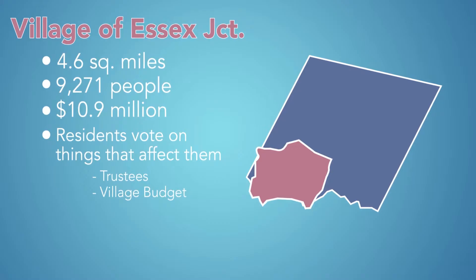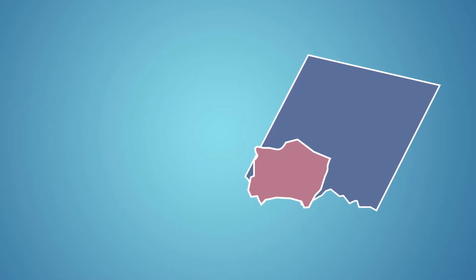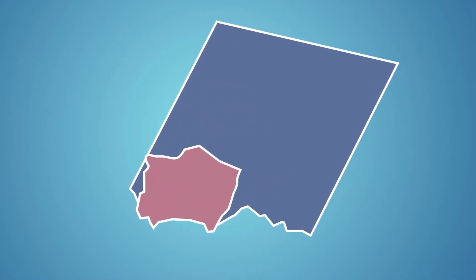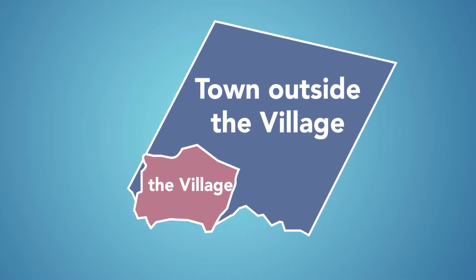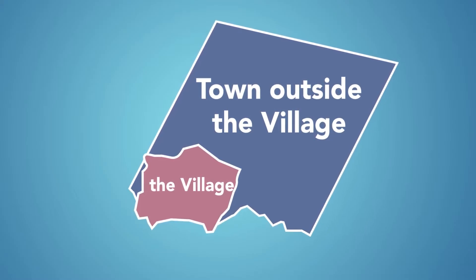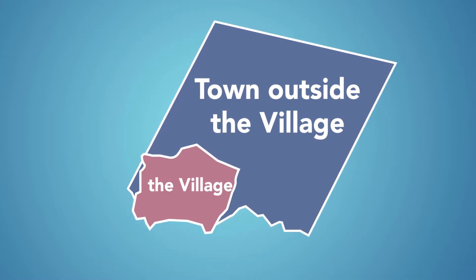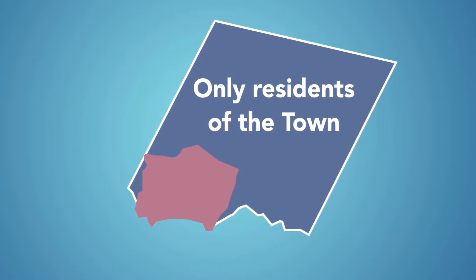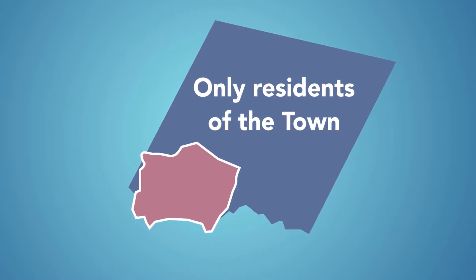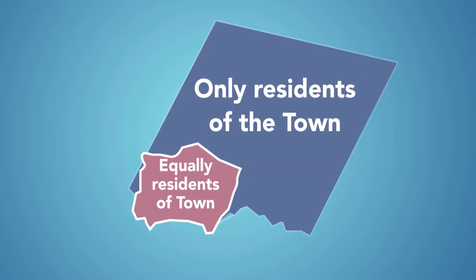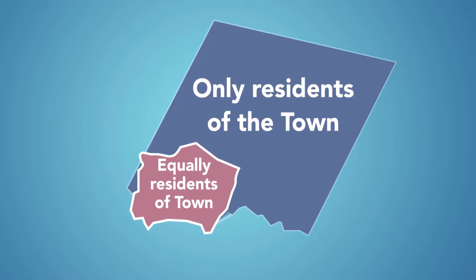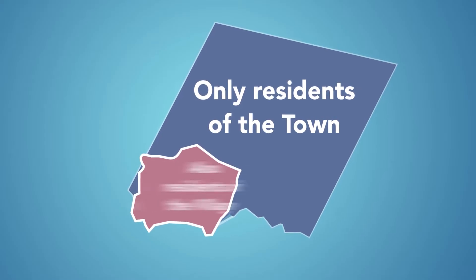When we talk about things in Essex, we talk about people who live in the town outside the village and those who live in the village. The town outside the village is not a separate municipality. People who live in the town outside the village are only residents of the town, while people who live in the village are equally residents of the town — and additionally, they are residents of the village.